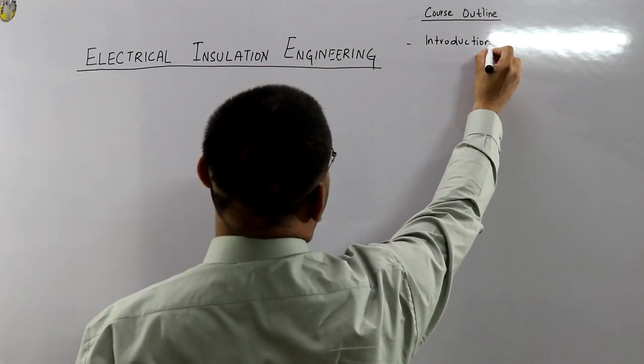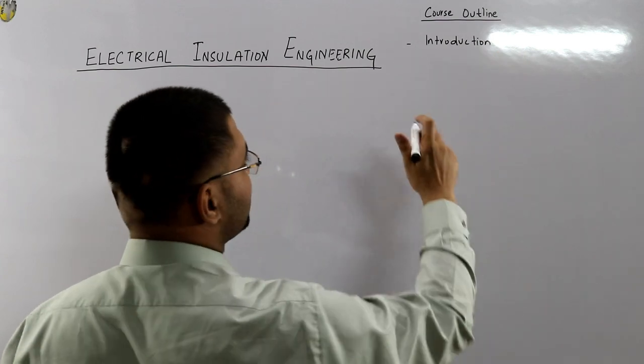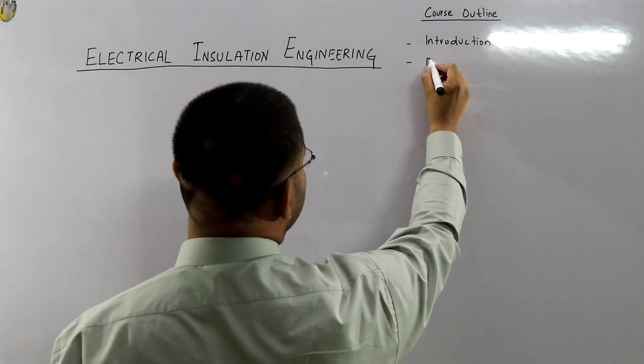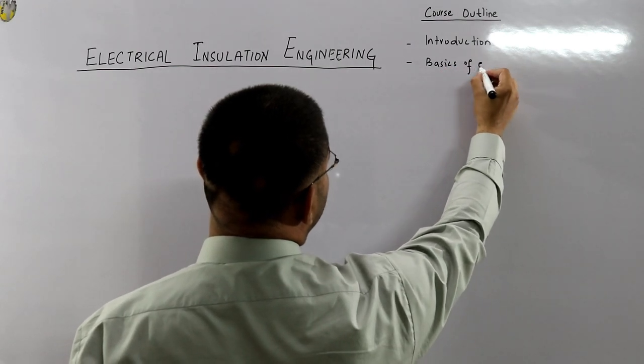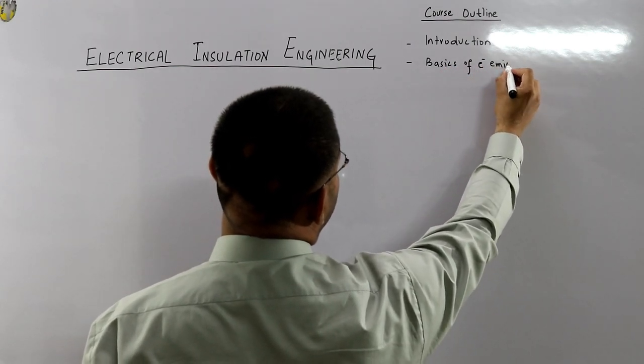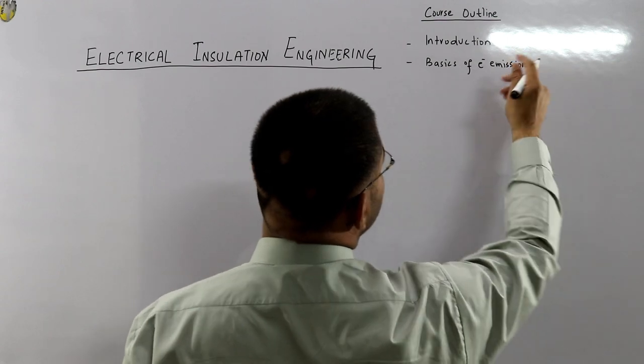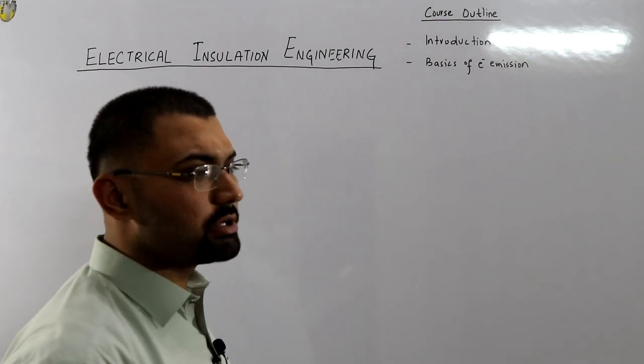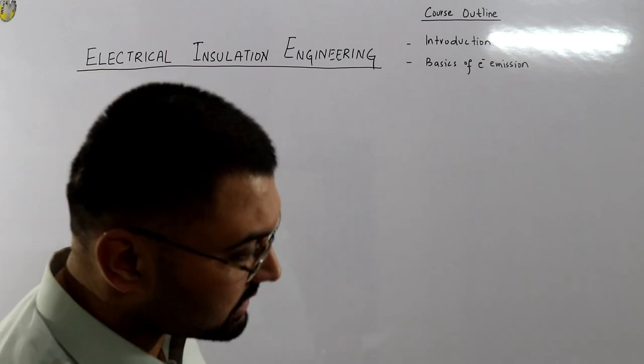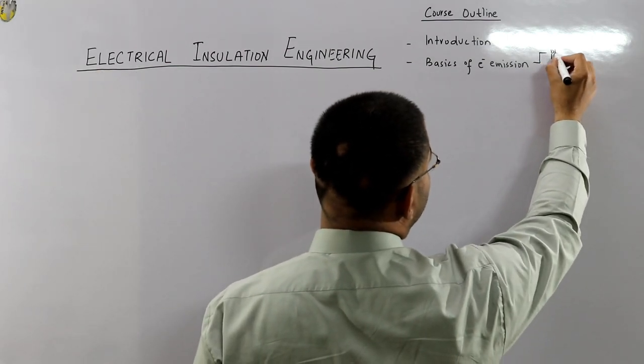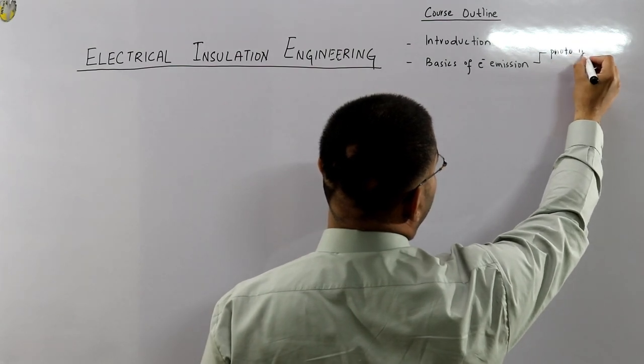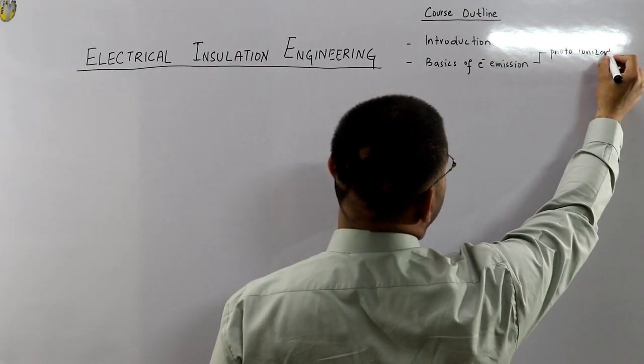We just talk about the basics. Then we have some basics of electron emission—basics of electron emission, which means what, how do you make an electron free. The energy band theory we may talk about it—you know it basically, but we can talk about it as photo ionization.